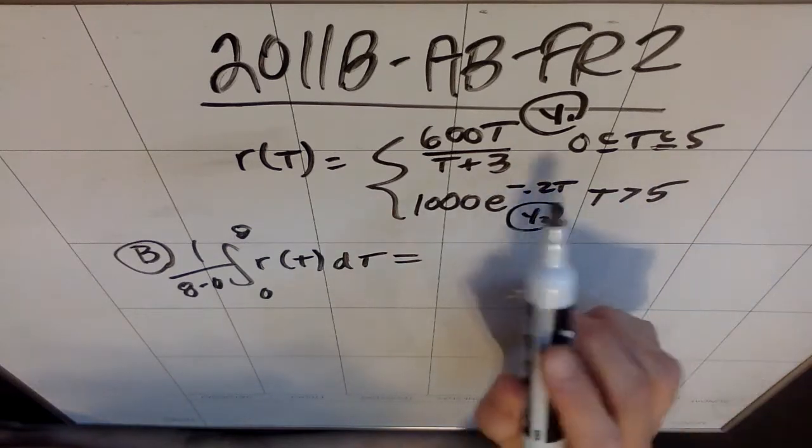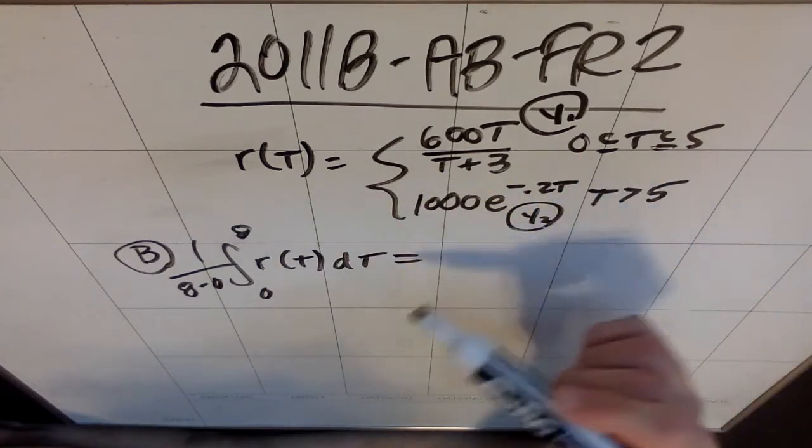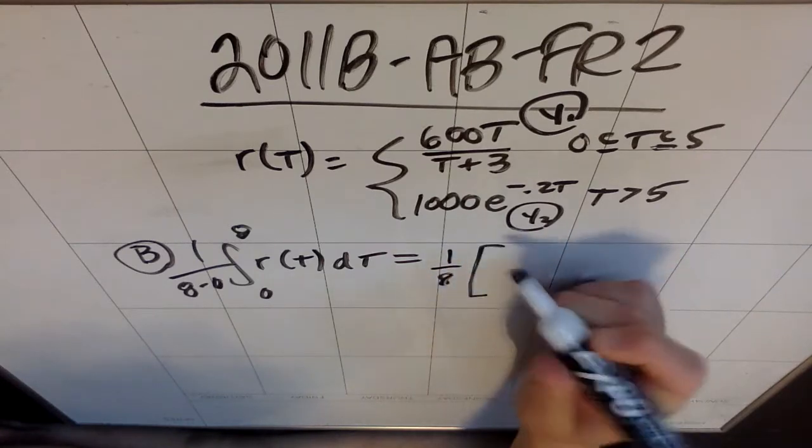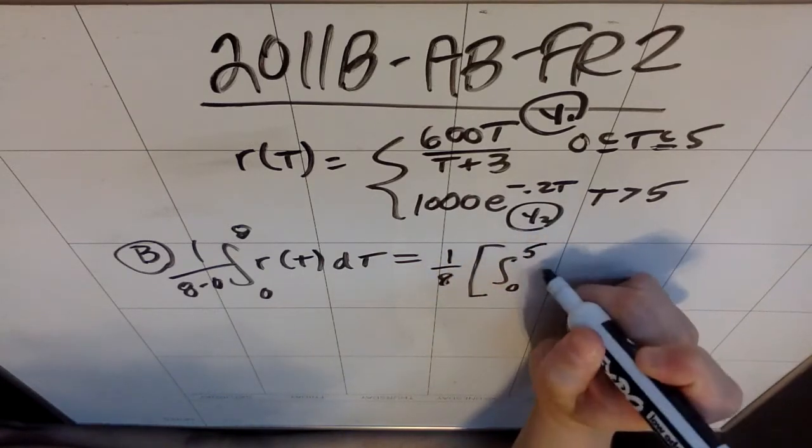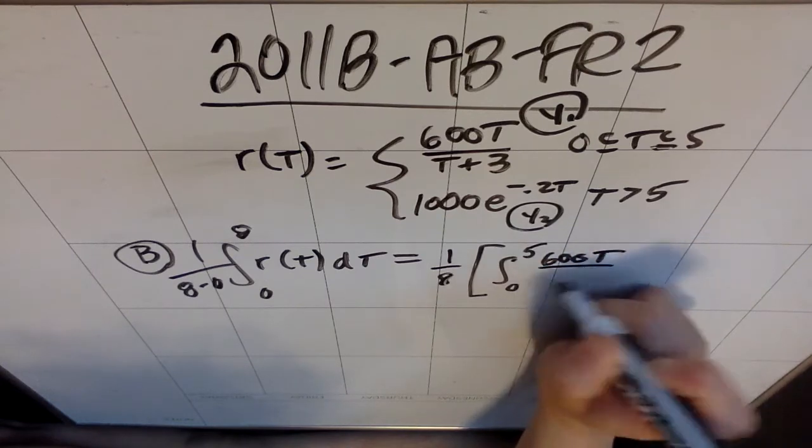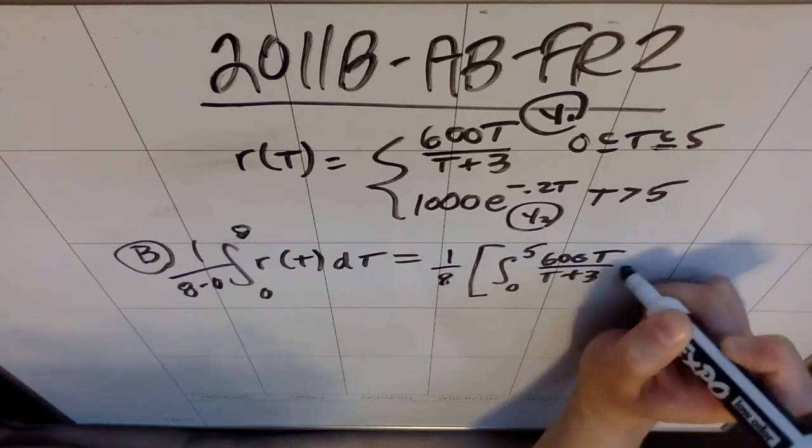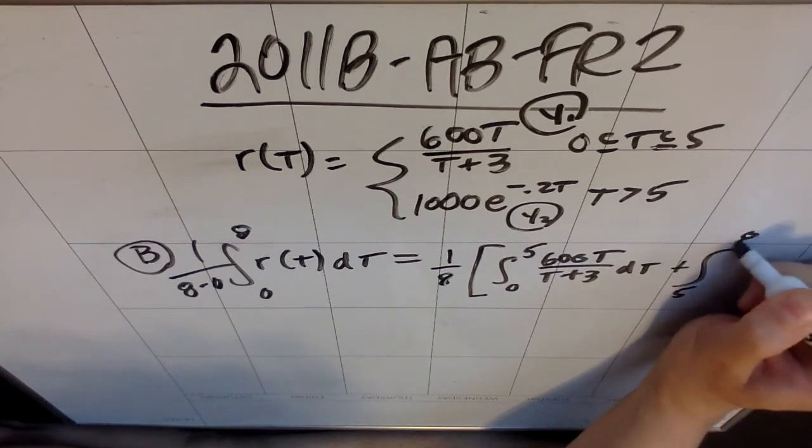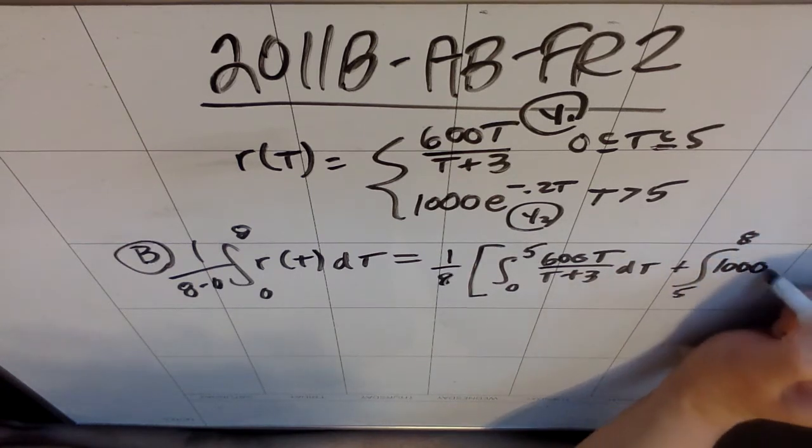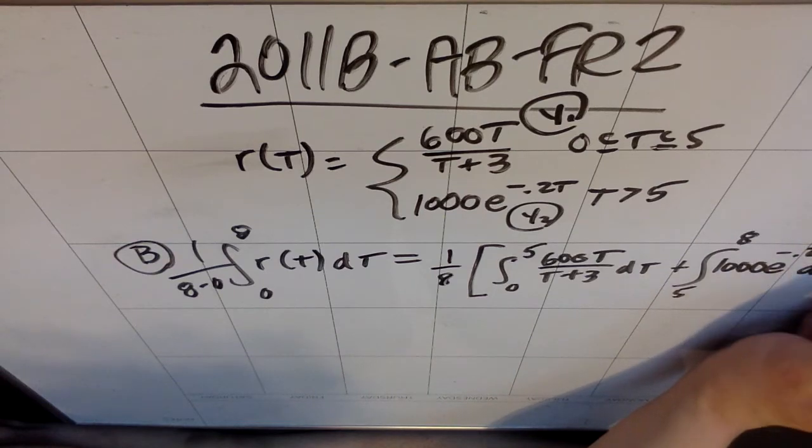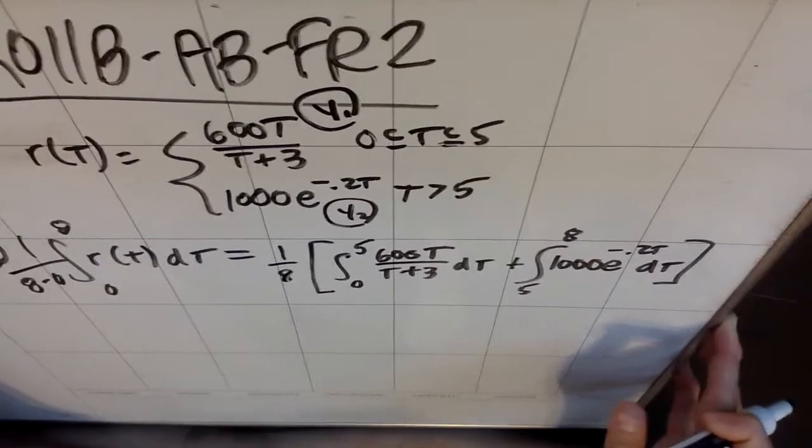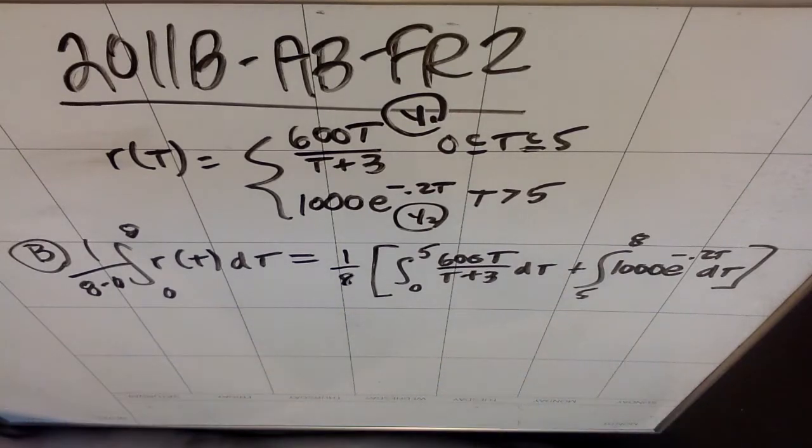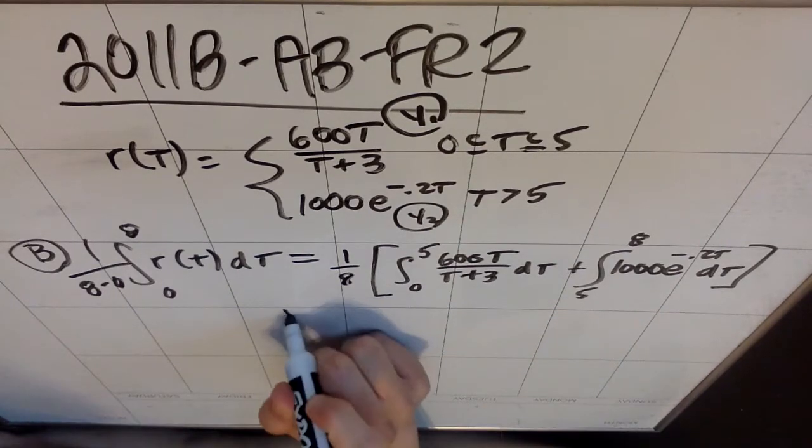But then the mental leap you have to make here is that if you're integrating this function, you actually have to split it into two integrals. This is 1 eighth times the quantity, and then you're going to integrate from 0 to 5 of the 600 t over t plus 3 dt plus the integral from 5 to 8 of the 1000 e to the negative 0.2 t dt. So you have to recognize that this integral, this is the formula you want, but you have to split it into two separate integrals. And then beyond that, you're just using the calculator to do the work.